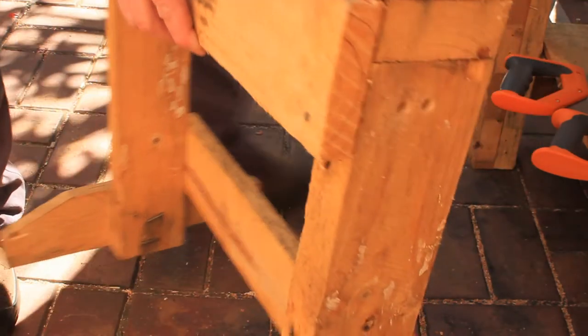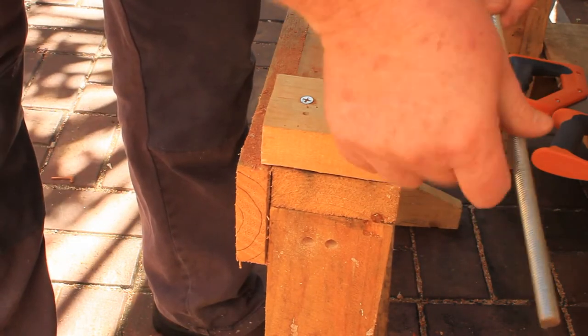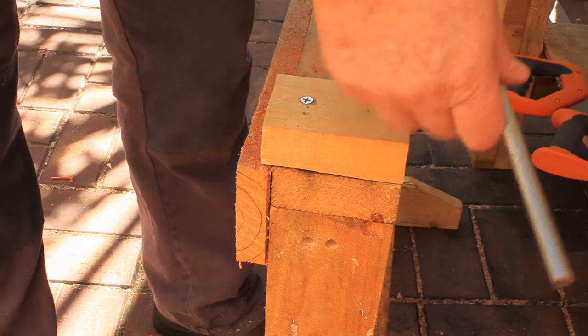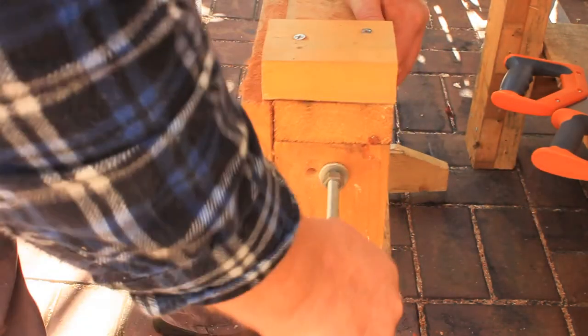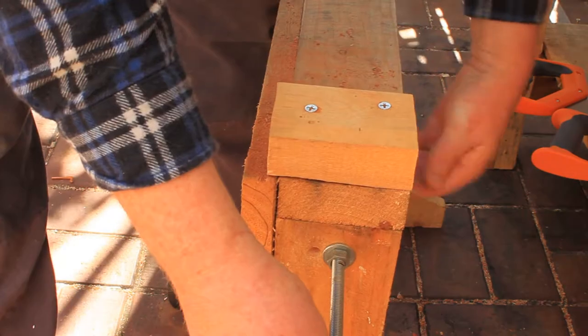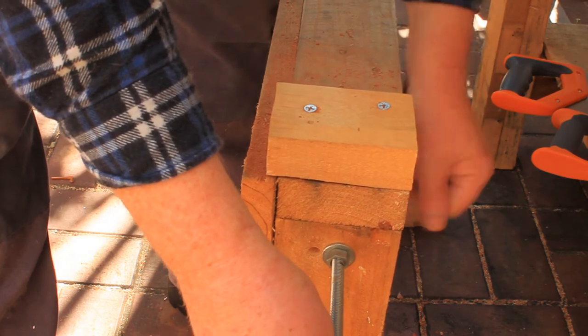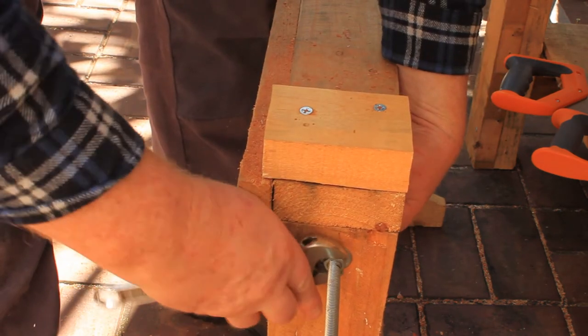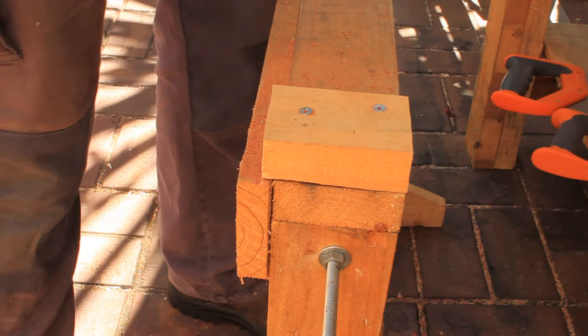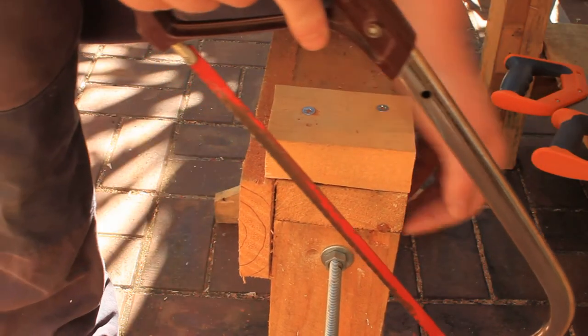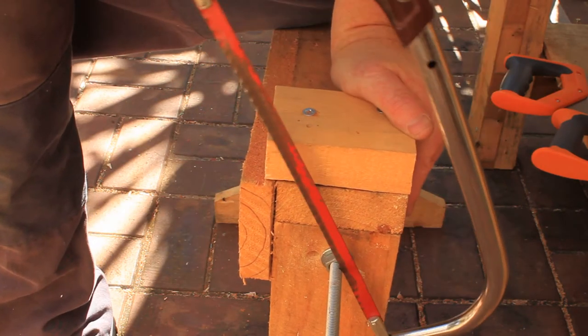Turn the saw stool around and use that hole we drilled earlier as a work fixture. Use a nut and washer on either side of the saw stool leg to hold the rod firmly. Now you'll be able to saw the threaded rod to length without any trouble.